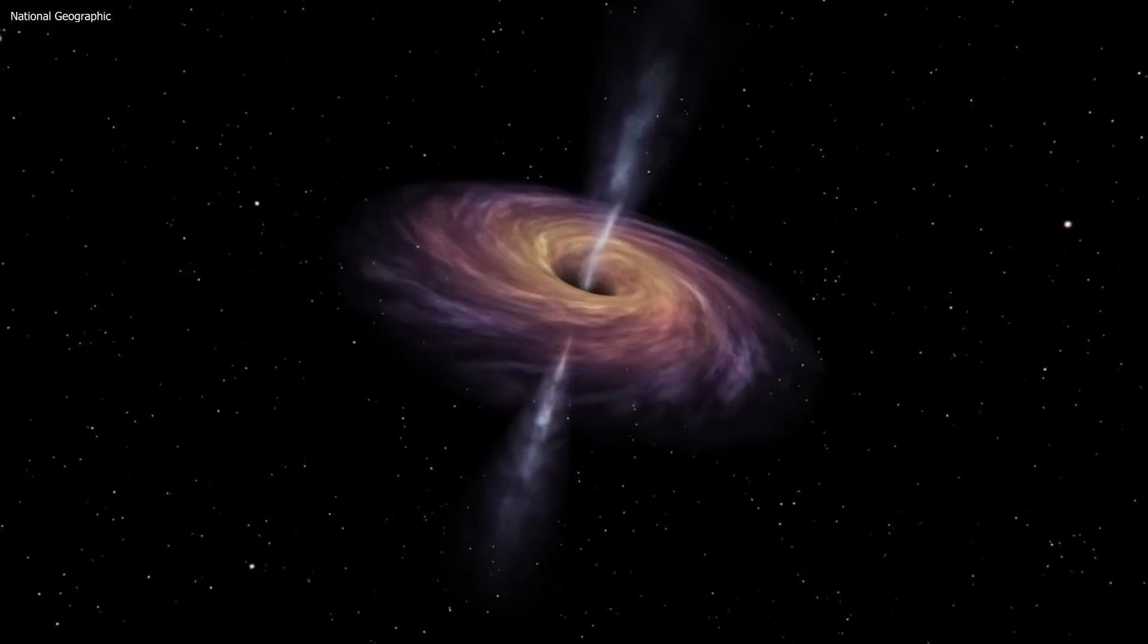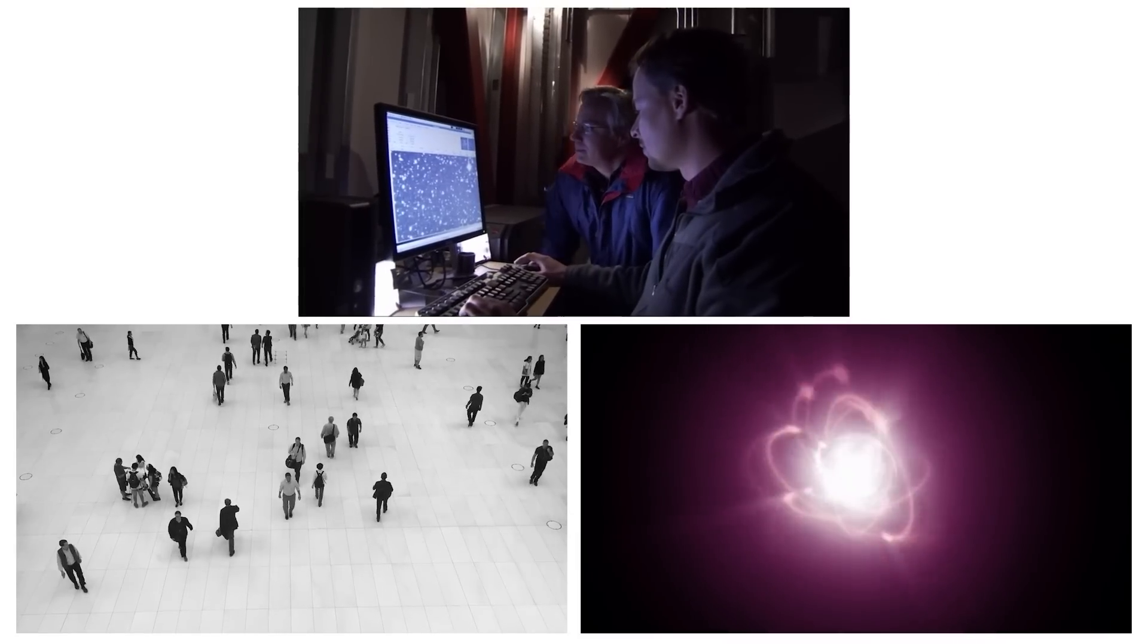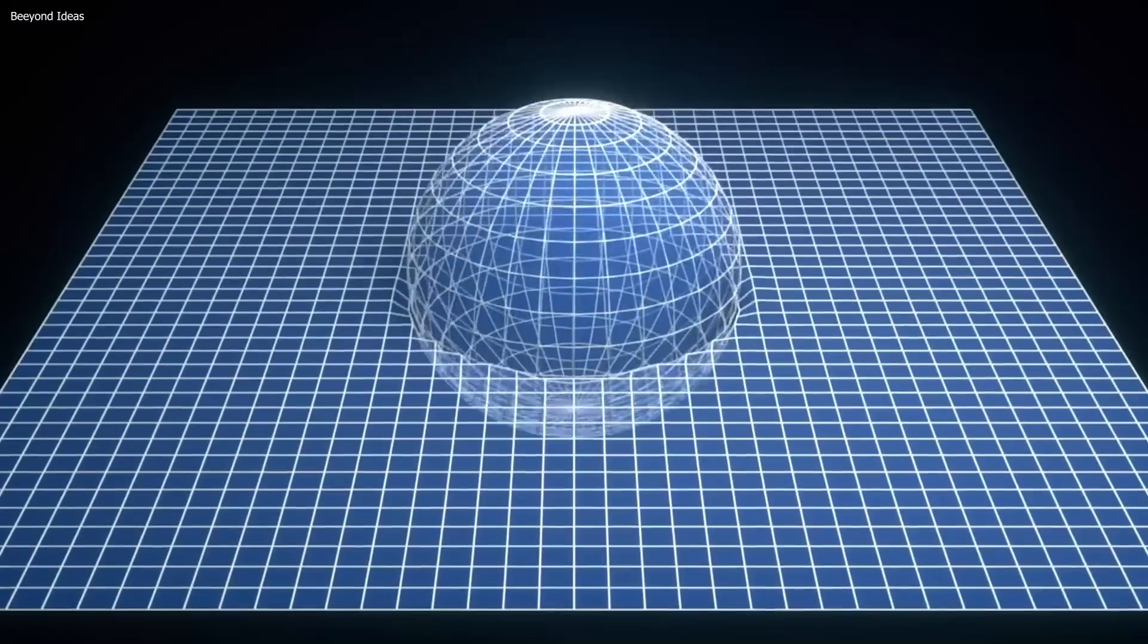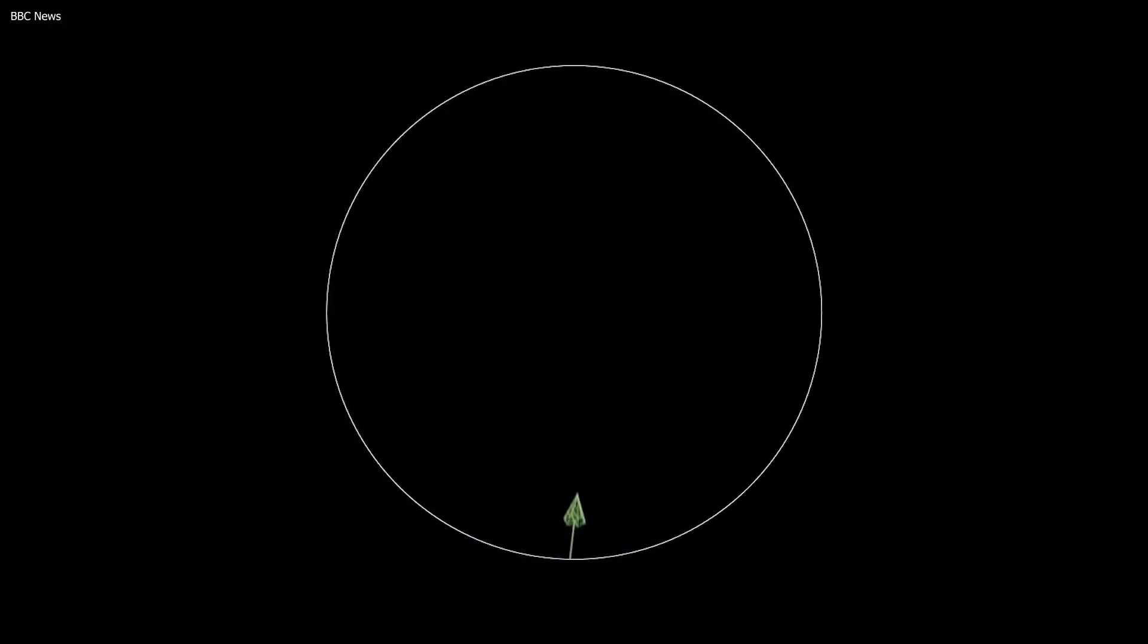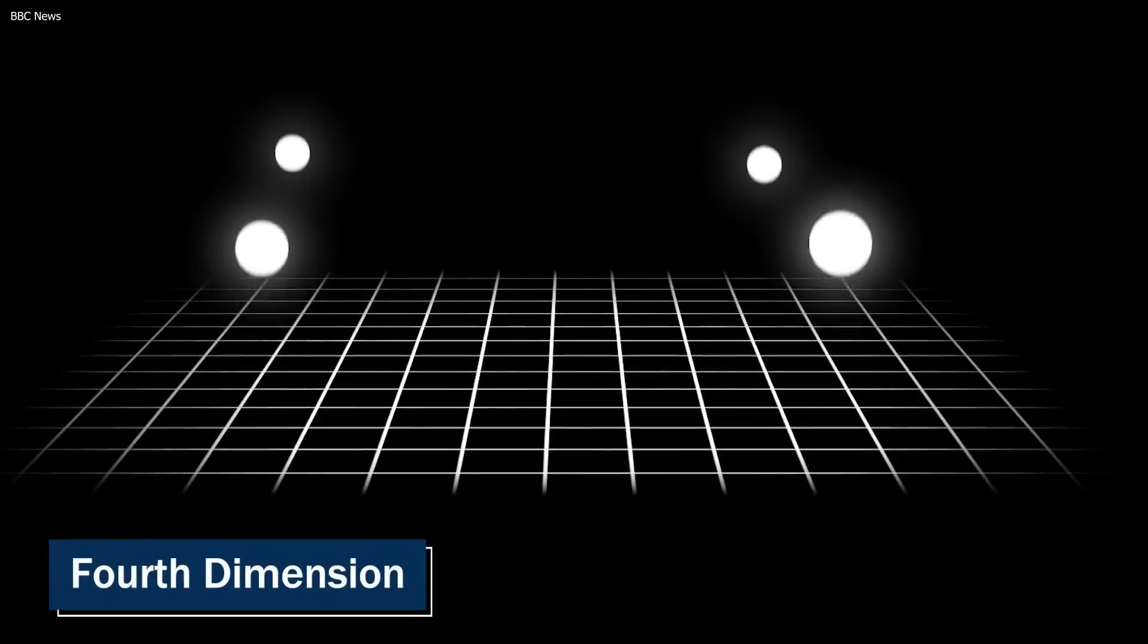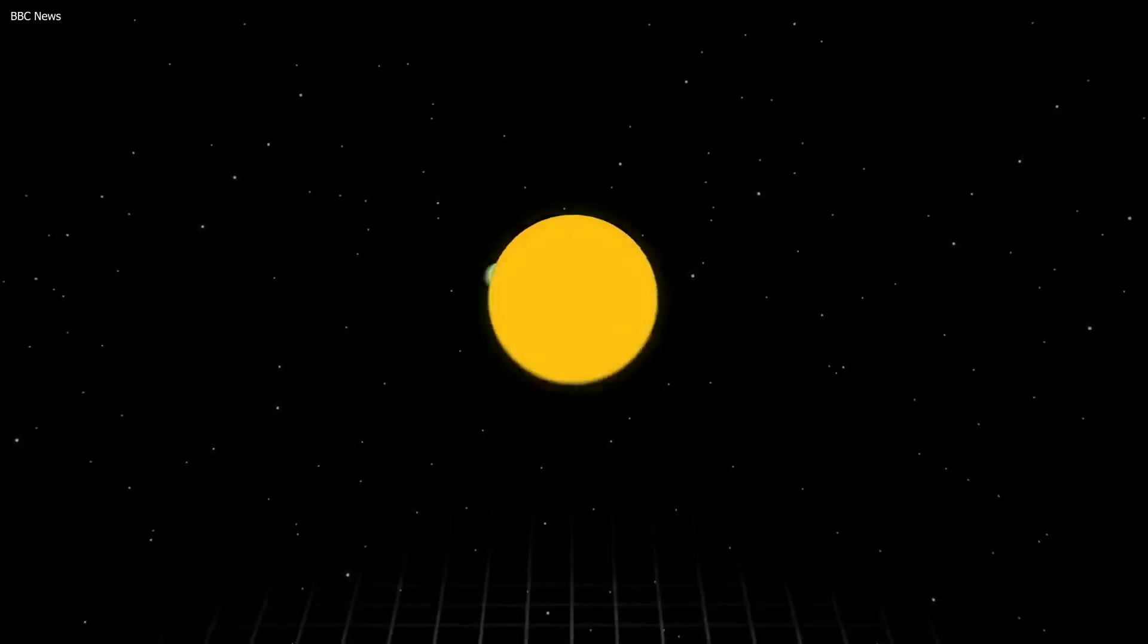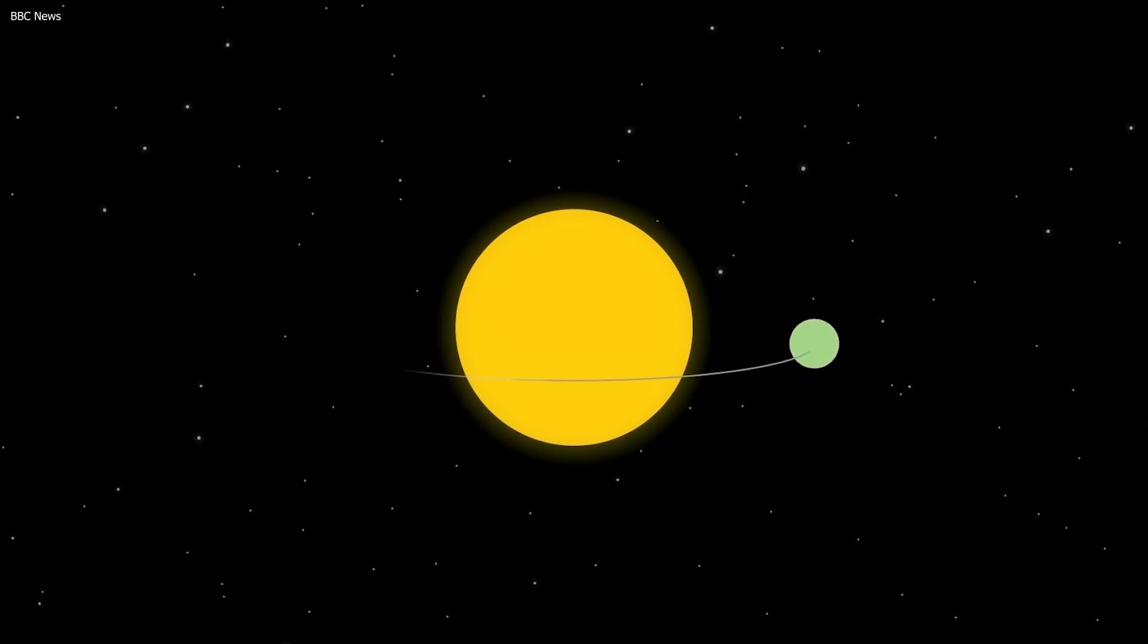Black holes are truly a mesmerizing phenomenon. With an almost supernatural power, they captivate scientists and the public alike. But what exactly are black holes? To start, let's look at Einstein's theory of relativity. According to this theory, space and time are intertwined in what is known as the fourth dimension. This means that gravity isn't a force as we might think, but rather a curvature in space-time caused by mass.